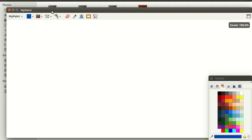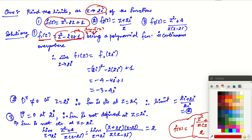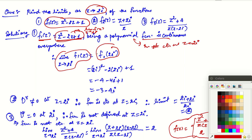Let us look at an example. We need to find the limit as z tends to 2i. The first function is f₁(z) = z² - 2z + 1. This is a polynomial function and therefore continuous everywhere. By the definition of continuity, the limit as z tends to 2i equals the value of the function at that point. The polynomial is in particular continuous at z = 2i, so the limit equals (2i)² - 2(2i) + 1. You can just evaluate this expression to get the answer.